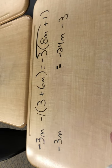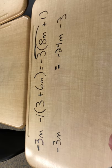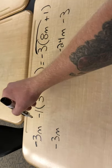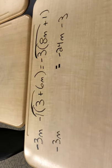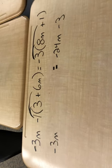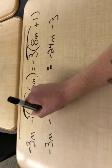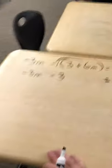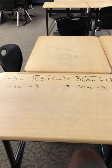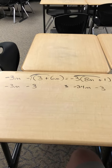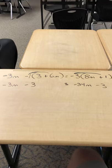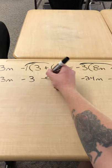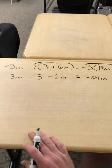If there's a minus sign in front of a parentheses, that always means that we're just going to distribute a negative, distribute the negative 1. So here we go. So negative 1 times 3 is negative 3, and then negative 1 times 6m is negative 6m.